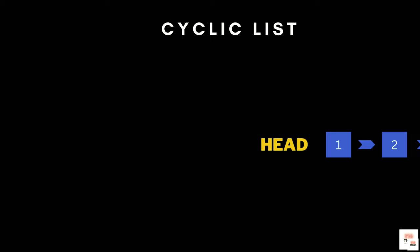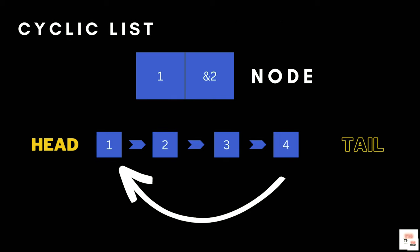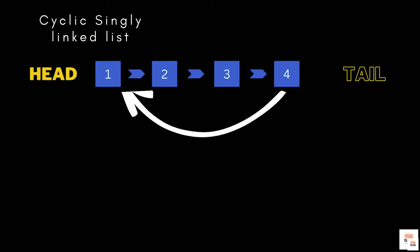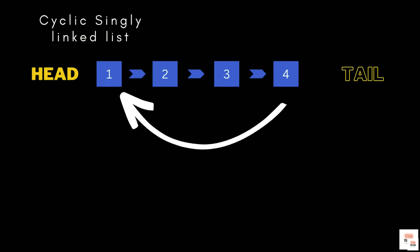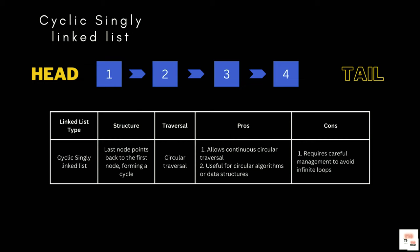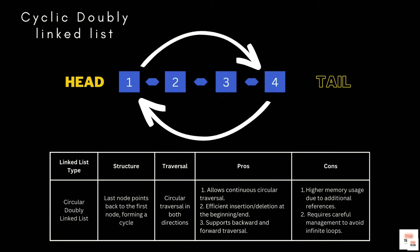Previously on DSA, we ended up with Cyclic Linked Lists. There are two types: Cyclic Singly and Cyclic Doubly, with explanation of Java code. At last we saw the complete tutorial on singly Linked Lists — the insertion and deletion part and how to work with it.